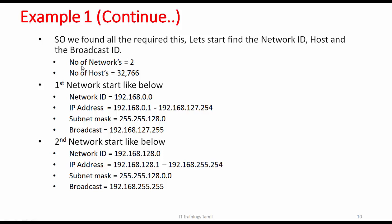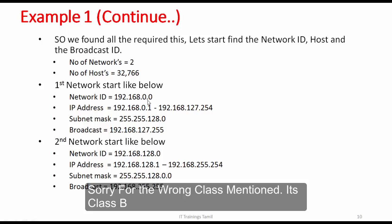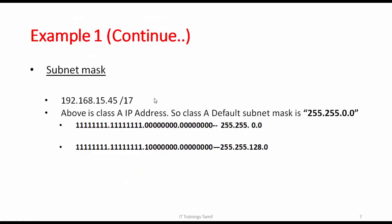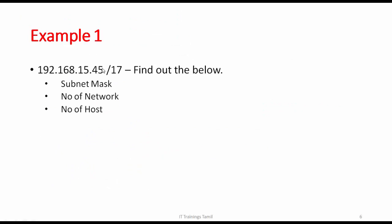Now we have two networks, and we have IPs all together. The first network is 192.168.0.0. In the previous video, we are using zeros, so we can use the IPs all together. But if we use the class, we will follow the rules.